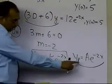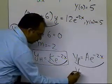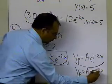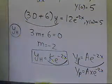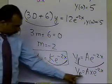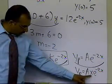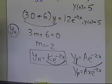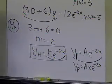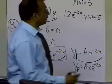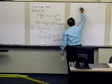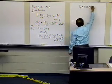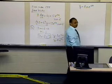So I have to choose the next possible independent solution. The particular part will be yp = a·x·e to the power minus 2x. That is the form of the particular part of the solution I should be choosing.